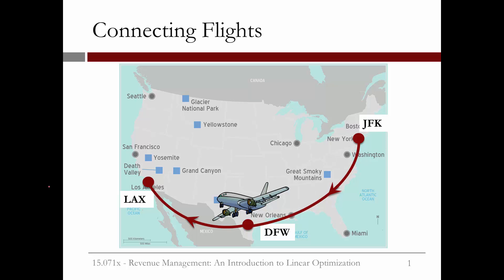Now, instead of just being able to go from JFK in New York to LAX in Los Angeles, let's suppose that the plane stops in Dallas at the Dallas-Fort Worth airport. We still are just using one plane, but the passengers can now fly from New York to Dallas, Dallas to Los Angeles, or from New York to Los Angeles by just staying on the plane in Dallas.